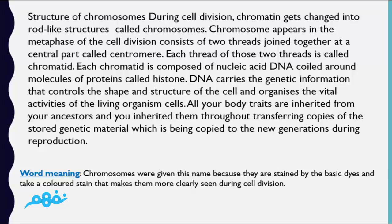All our body traits are inherited from our ancestors, and we inherit them through transferring copies of the stored genetic material, which is copied to new generations during reproduction. Chromosomes were given this name because they are stained by basic dyes and take a colored stain that makes them more clearly visible during cell division.